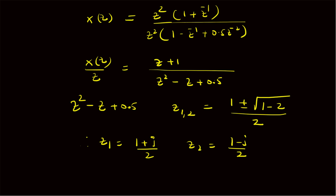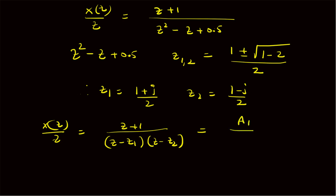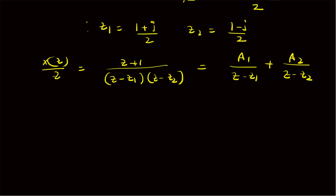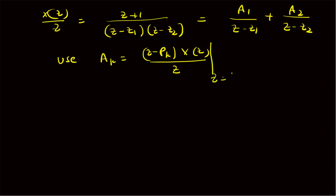Now we can apply the partial fractions method — that is, X of Z by Z will be equal to Z plus 1 divided by Z minus Z1 times Z minus Z2, which will be equal to A1 by Z minus Z1, plus A2 divided by Z minus Z2. Here we apply Method 2 for finding A1 and A2. In this method, we use the following formula: AK will be equal to Z minus Pk times X of Z divided by Z, and then we substitute Z equal to Pk.